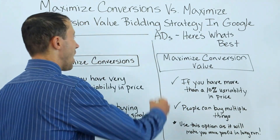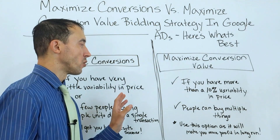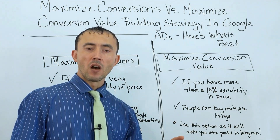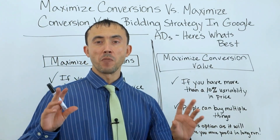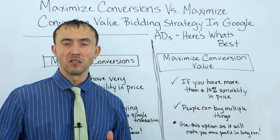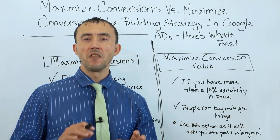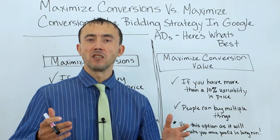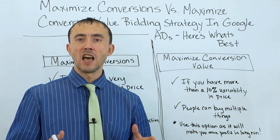Getting into the content, I've got maximize conversions and maximize conversion value separated out into two different columns so I could talk about the pros and cons of both. In order to know why you should be choosing one of these, you should understand how it works. Both are what people in the ad industry call smart bidding strategies, where Google uses its own machine learning algorithms to identify how to get you more results, looking at the customers who convert and the people that don't convert, seeing the statistical anomalies between those two parties.